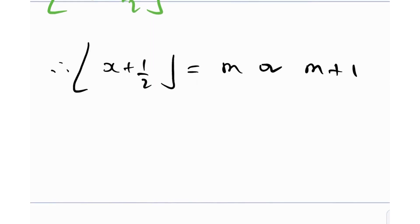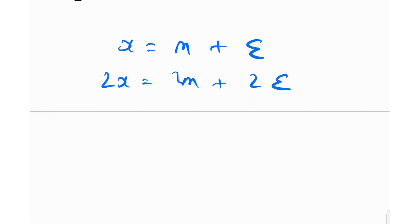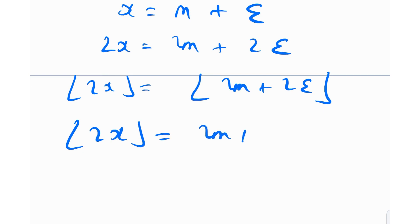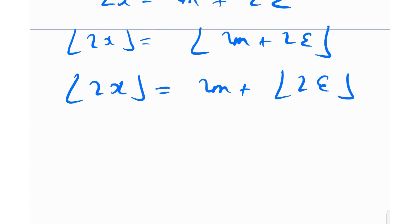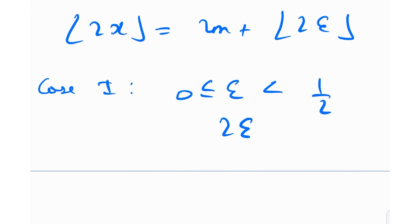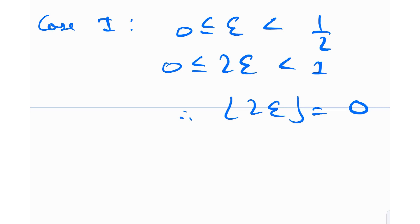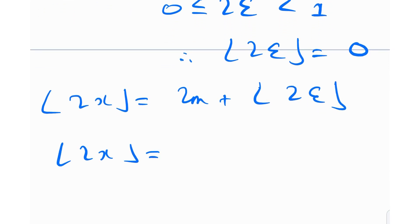Let's take this further. Since x = m + ε, we have 2x = 2m + 2ε, so floor(2x) = 2m + floor(2ε), since 2m is an integer. Now again splitting into two cases: Case 1 — ε between 0 and 1/2, so 2ε is between 0 and 1, meaning floor(2ε) = 0. Therefore floor(2x) = 2m.